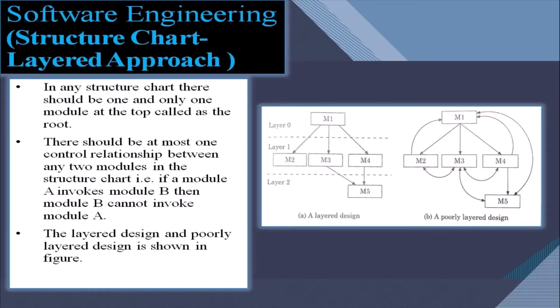In a structure chart, there should be one and only one module at the top, called the root. For example, M1 is the root module or control module. There should be at most one control relationship between any two modules in the structure chart. That is, if module A invokes module B, then module B cannot invoke module A. The difference between layered design and poorly layered design is illustrated in the figure.